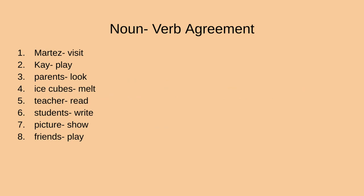We're going to begin by doing our noun-verb agreement. That means that our noun and our verb agree. Most of the time, if our word is a singular noun, you are going to add an S to the end of our verb. If it is a plural noun, it is normally left alone.